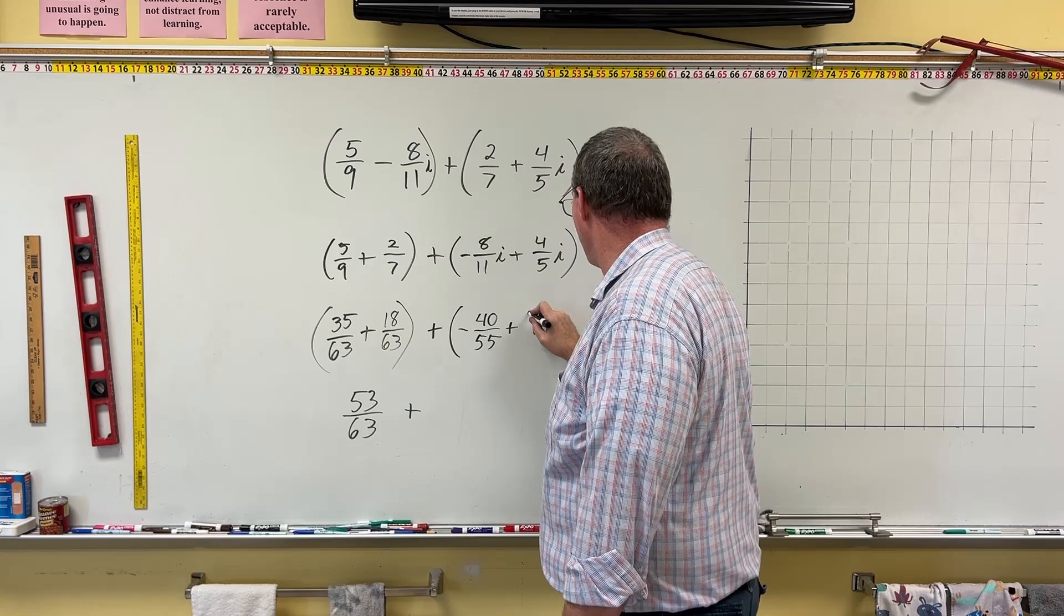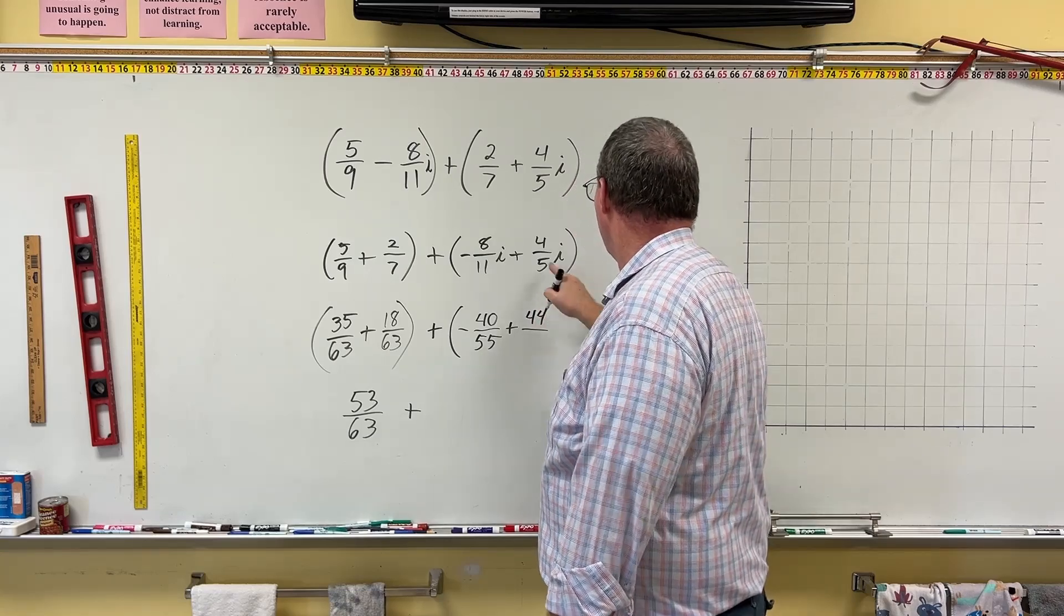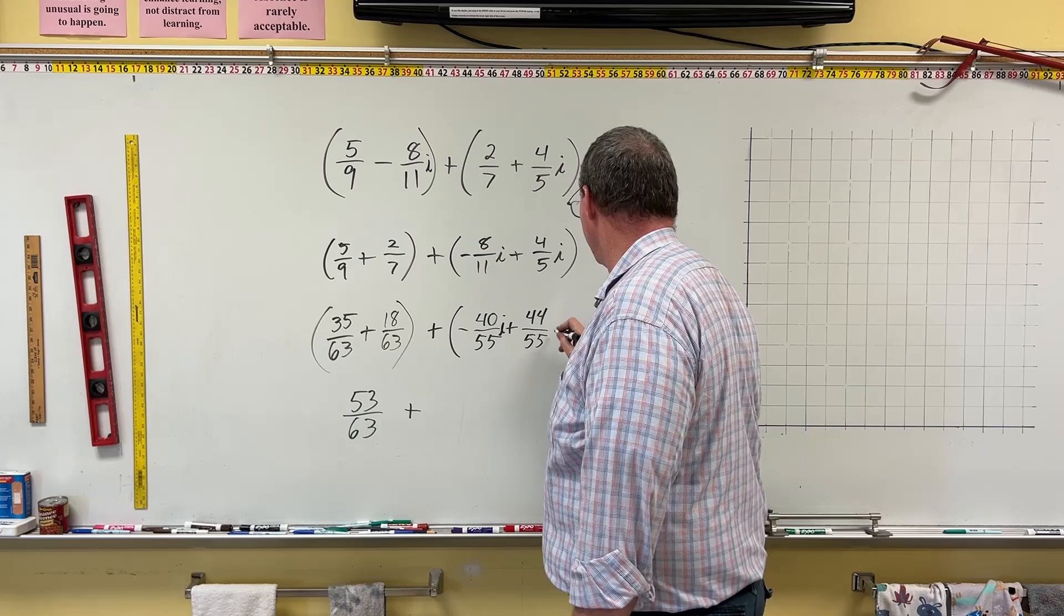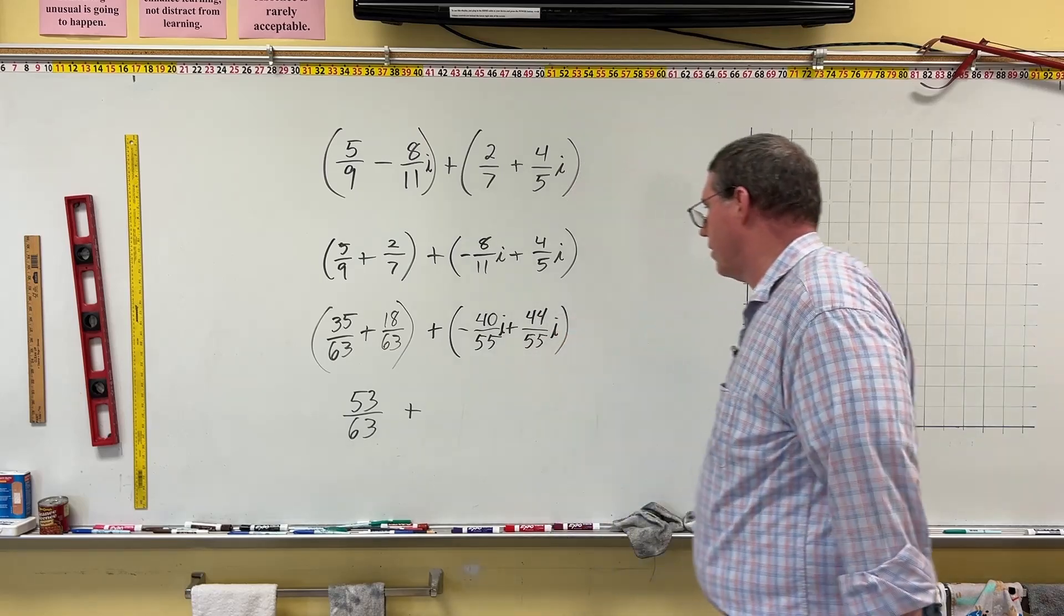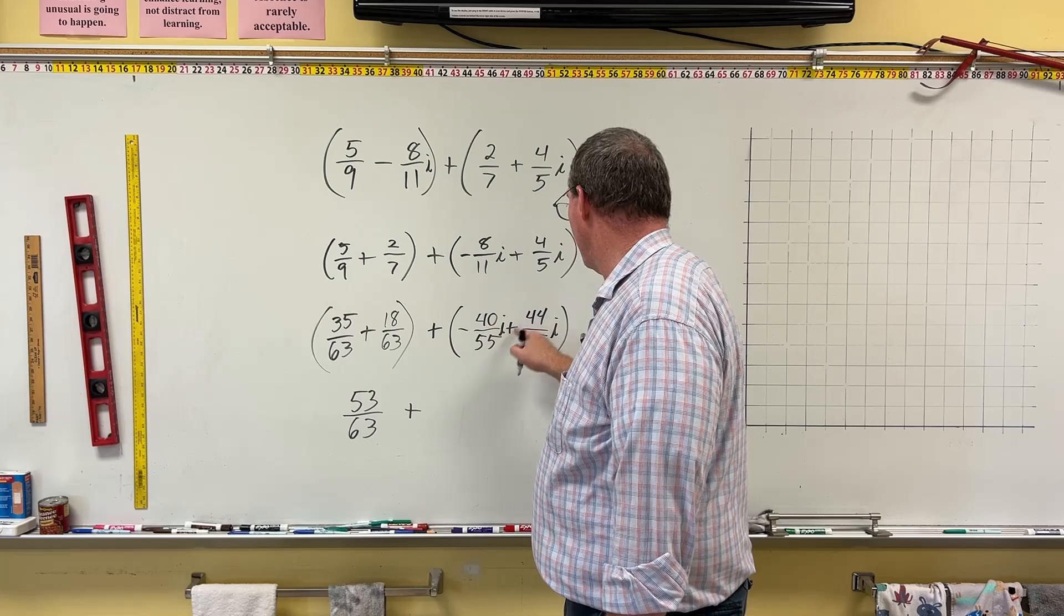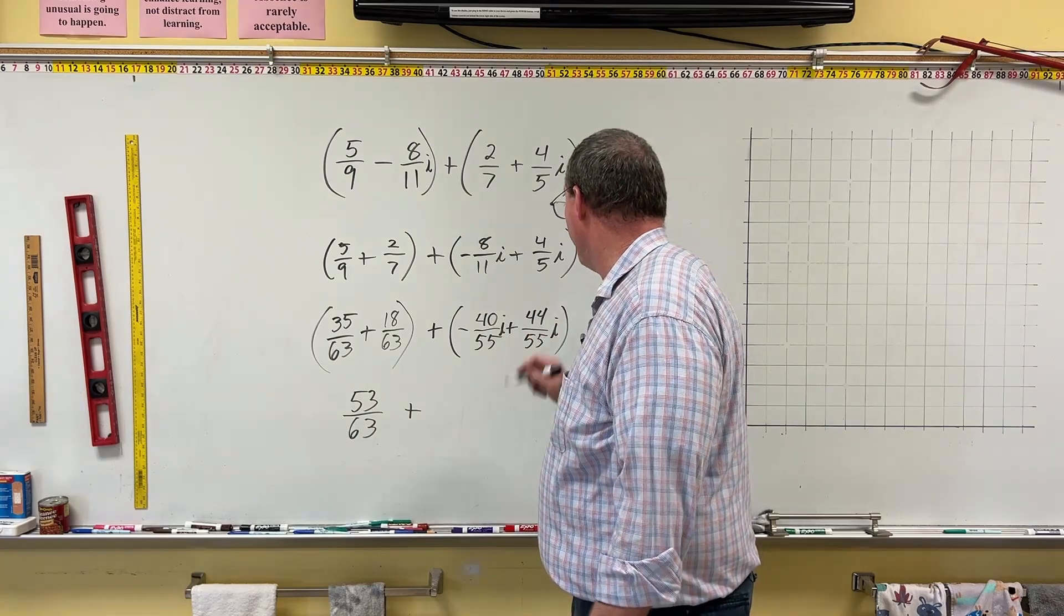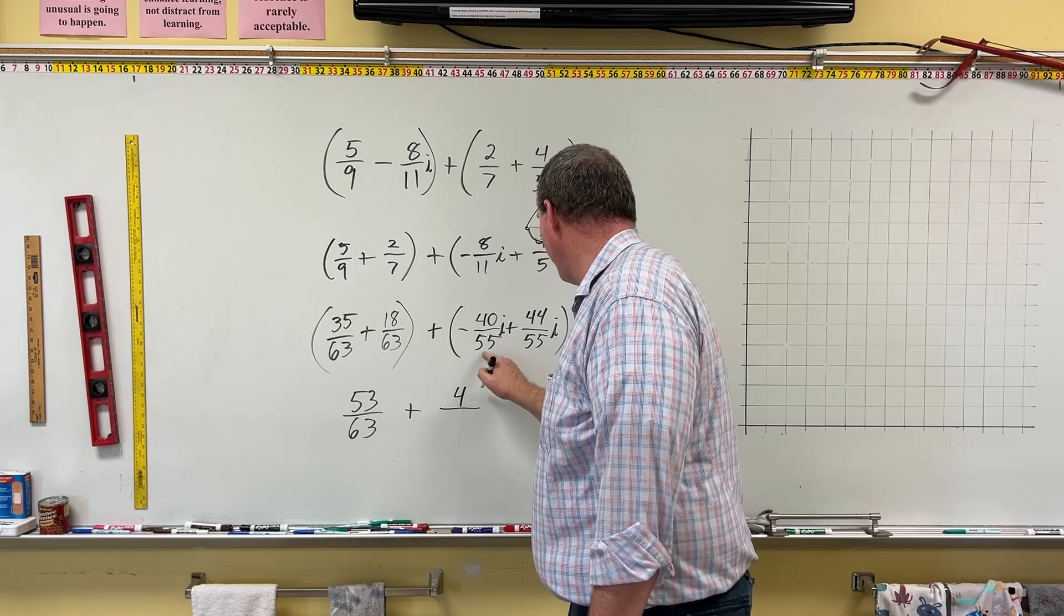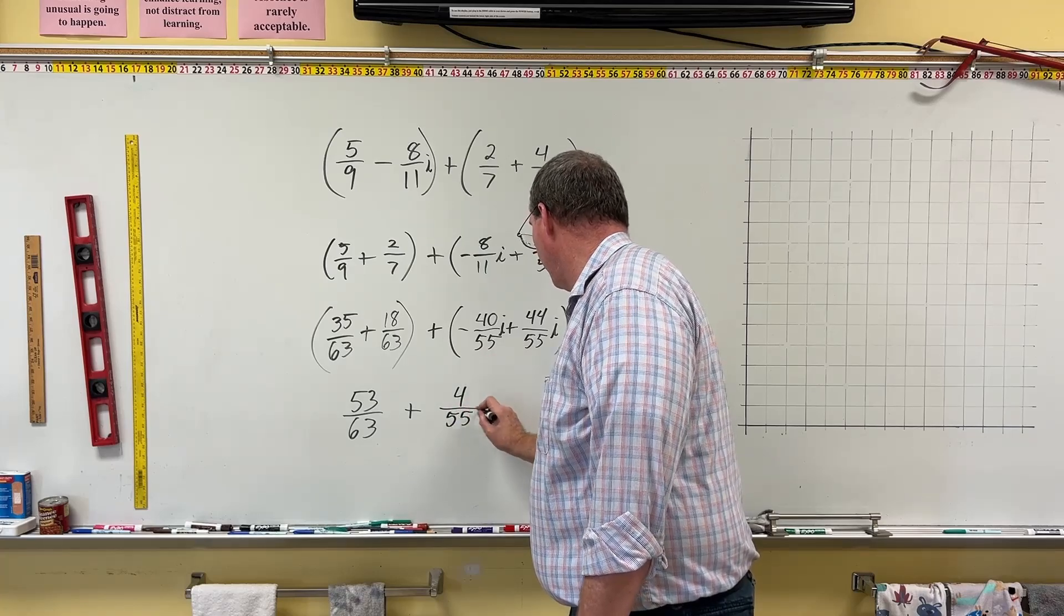plus the 4 fifths. Each of these have to be multiplied by this 11. So, 11 times 4 is 44, and 11 times 5 is 55. There's an i on here, and there's also an i on here. Sorry about that. Forgot the i. So, now we have negative 40 plus 44. That's 4. And so, we're going to wind up with 4 over 55 i.